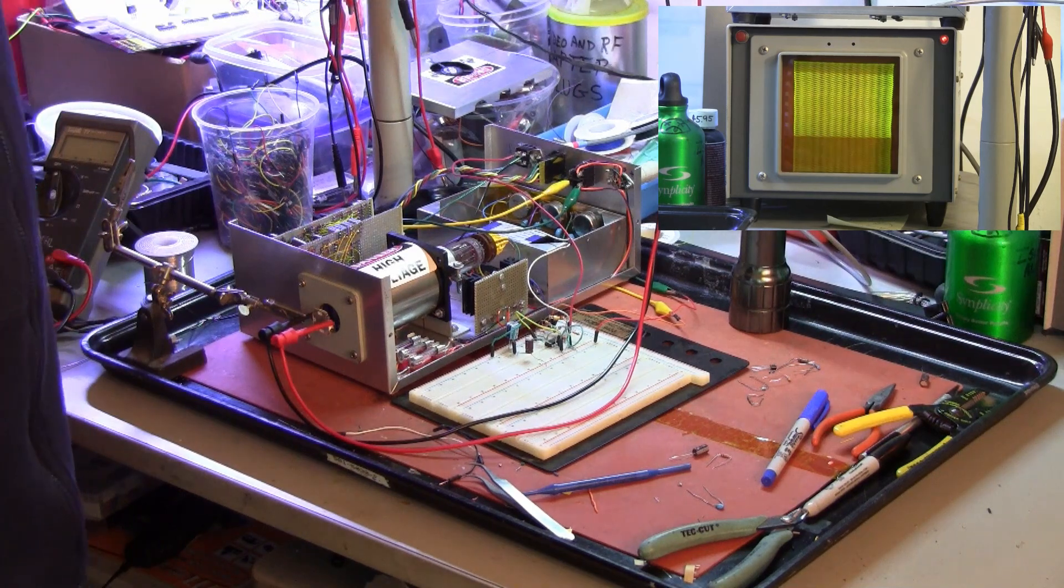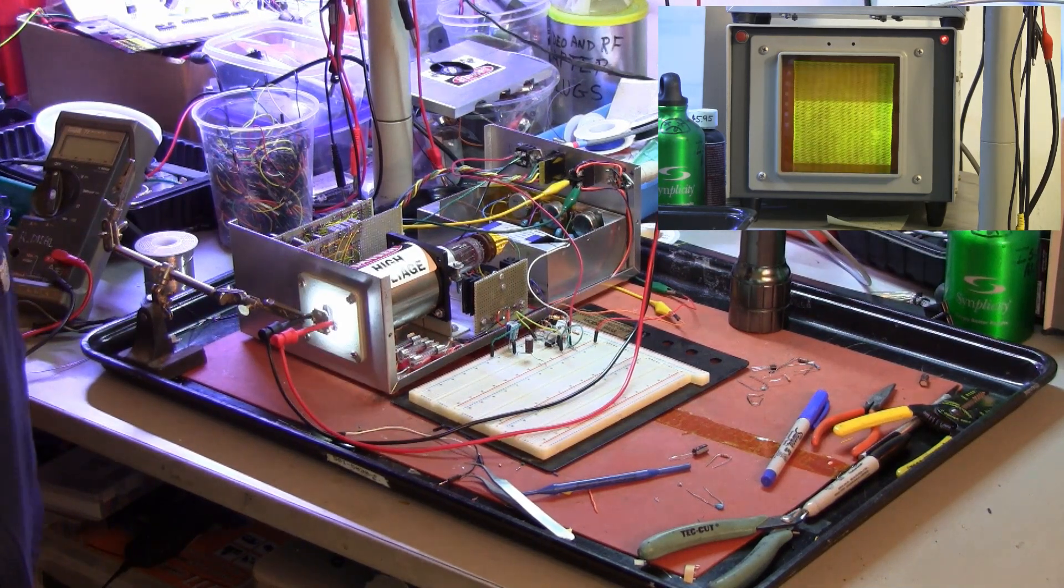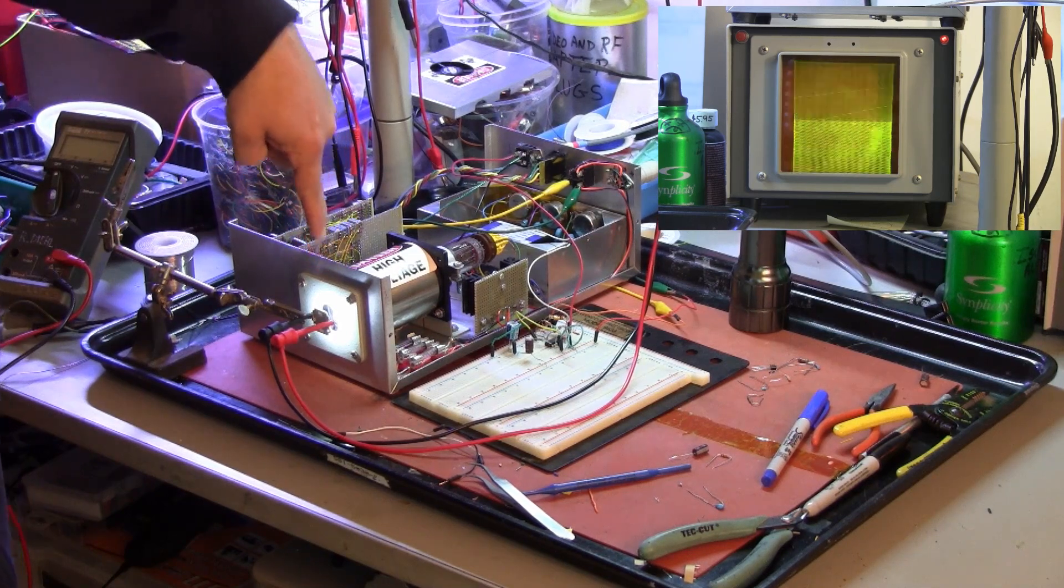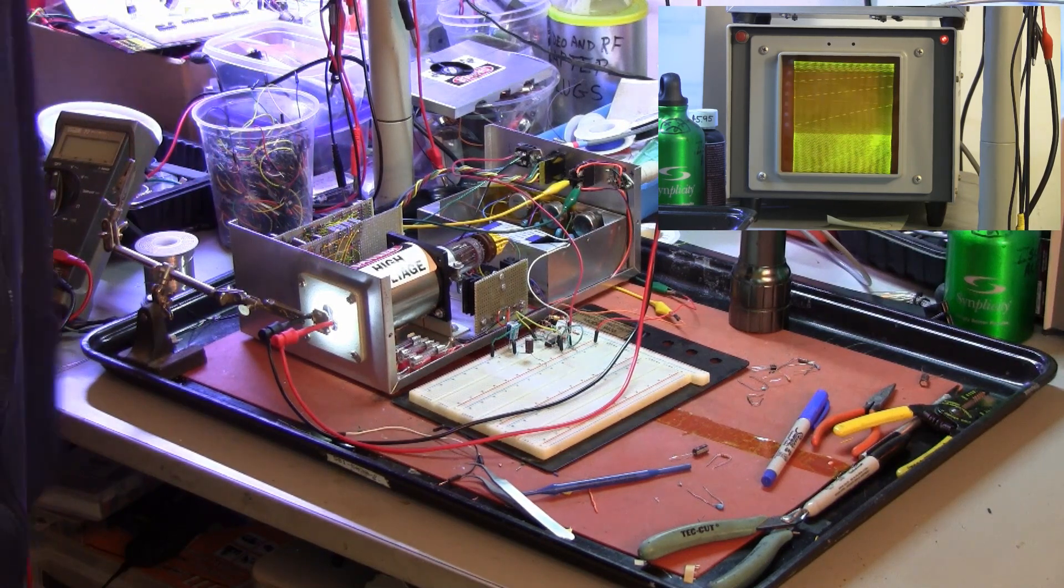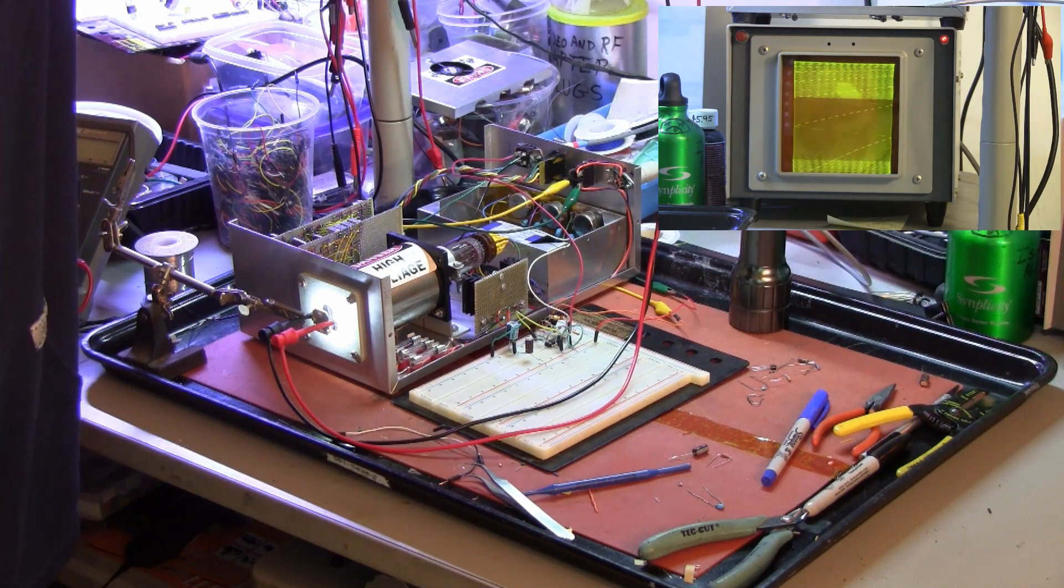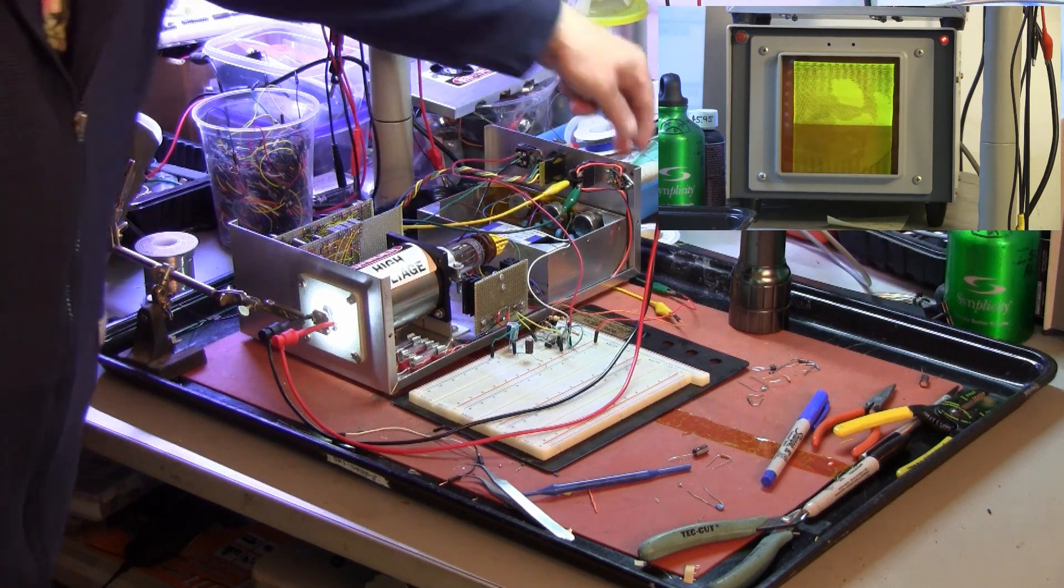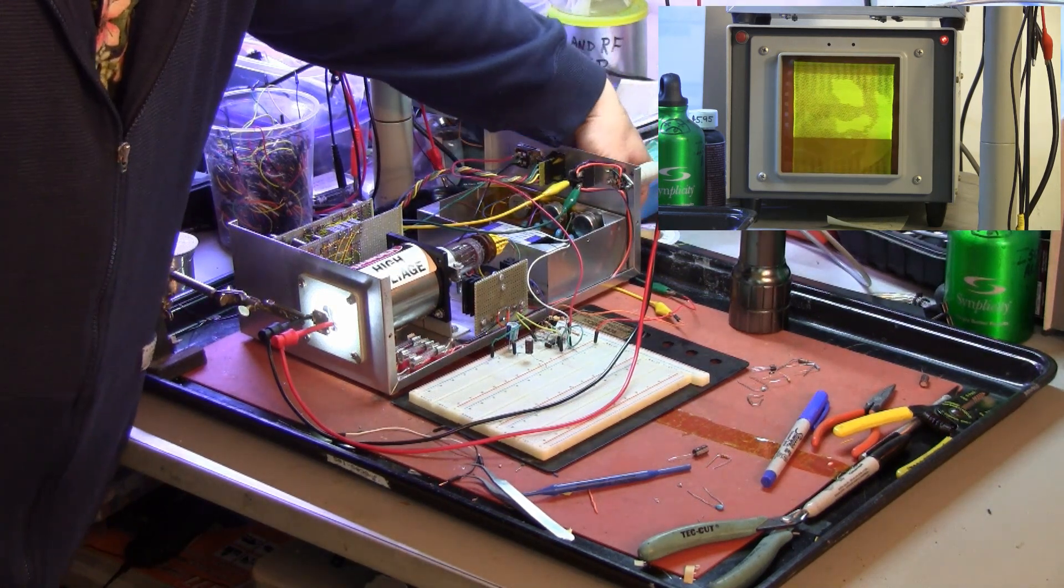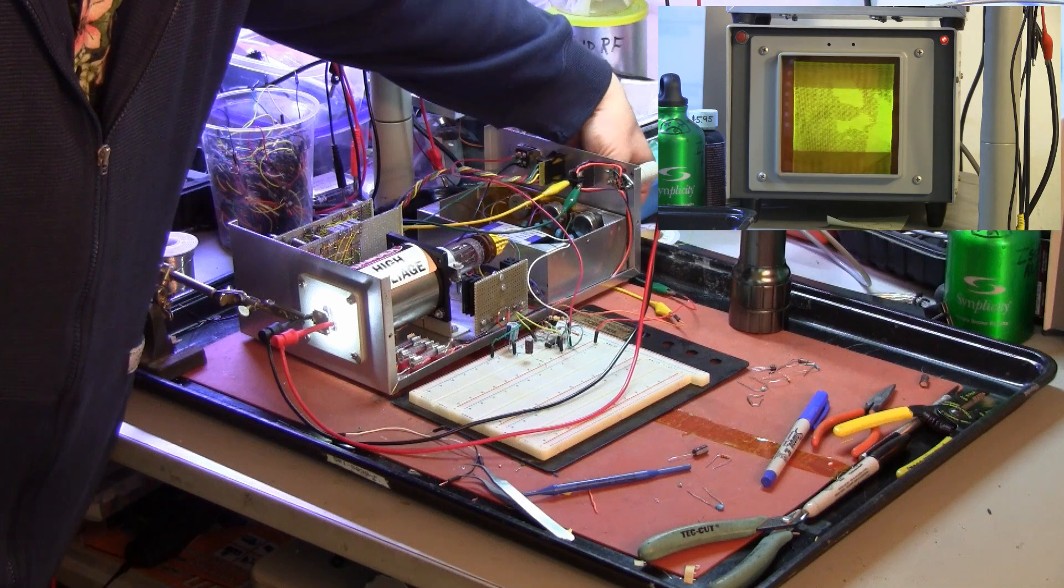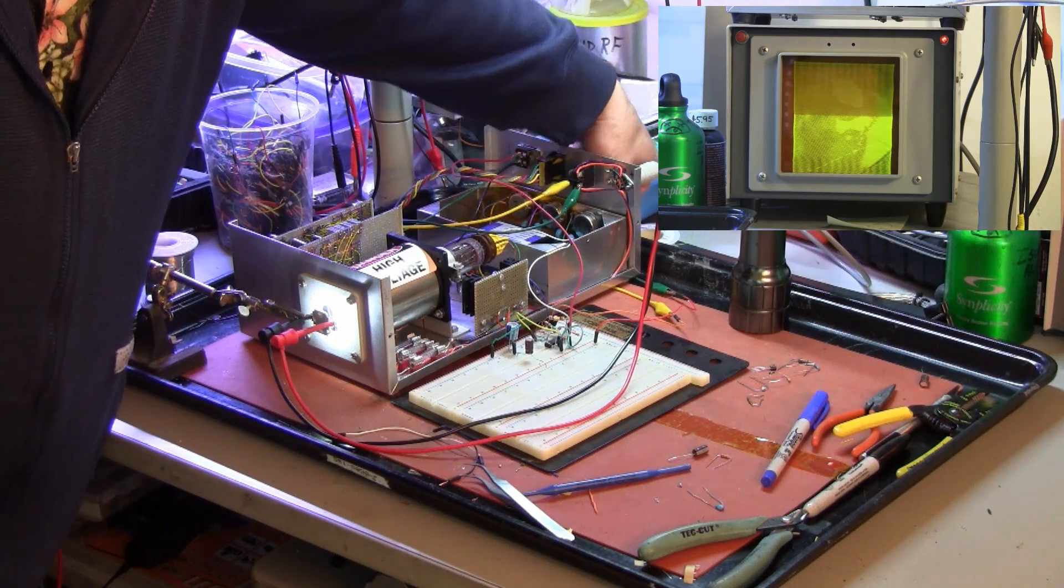Then we turn on the power supply for the LED and you see the LED light up right down here. And by adjusting the brightness of the LED you can begin to see Farnsworth's mug on the screen and we can play with the settings of the camera tube bias to vary the quality of the image there as well.